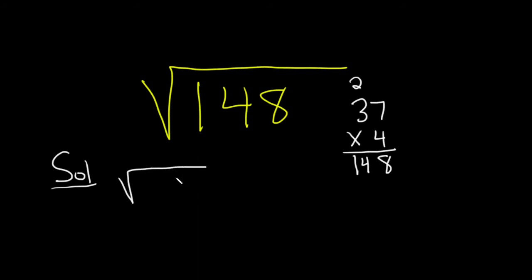We can take the square root of 148. We can write this as the square root of 4 times 37.